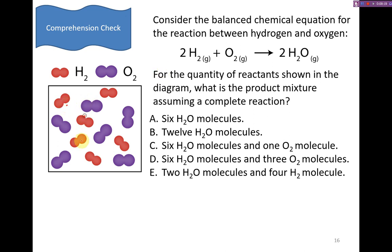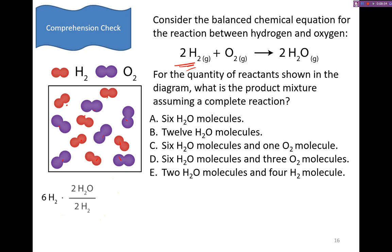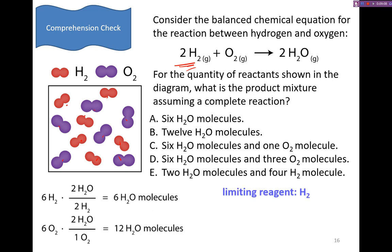What you should recognize is that we have six hydrogens and six oxygens. But it's going to take twice as much hydrogen as it does oxygen. So if we have six hydrogen, and for every two hydrogen we produce two water, that means we could produce six water molecules. If we used up all of the oxygen, it's a two to one ratio and we could produce 12 water molecules. So our limiting reagent has to be hydrogen.